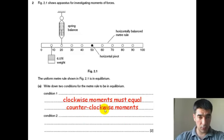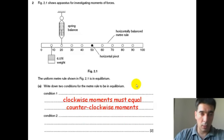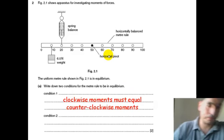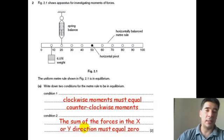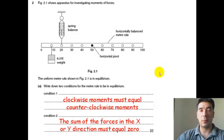So, clockwise moments must be equal to the counterclockwise moments or anti-clockwise. The second condition is that the forces acting in the x direction must be equal and the forces acting in the y direction must be equal. Or, forces up and down must be equal and forces left and right must be equal.